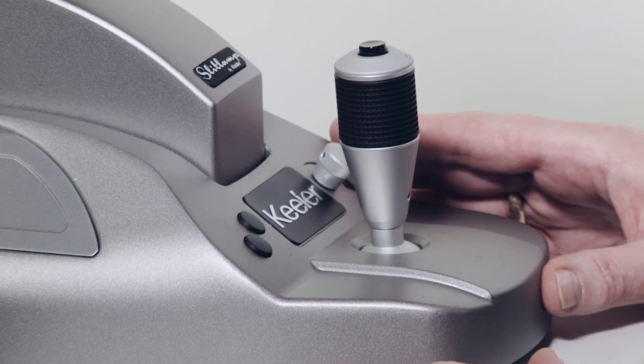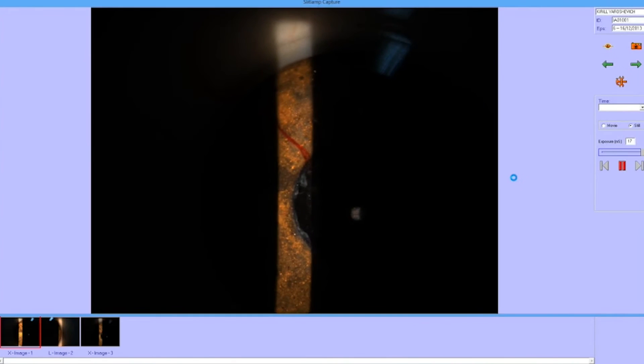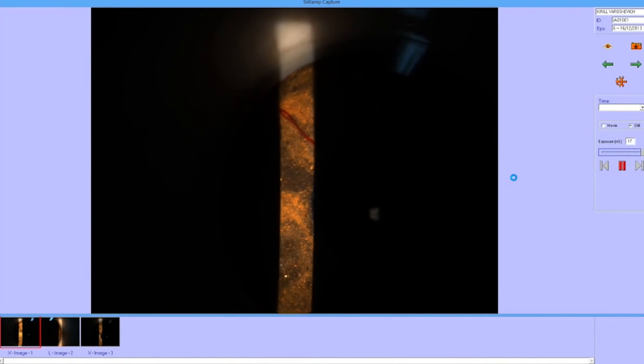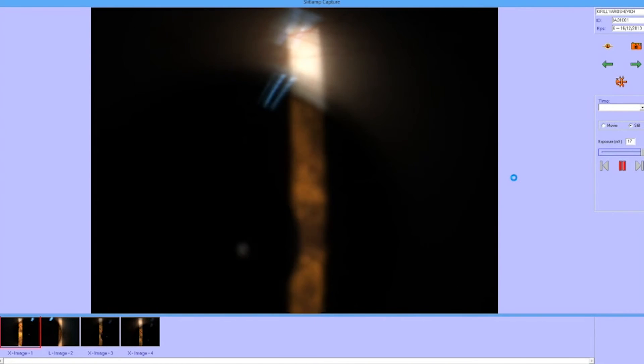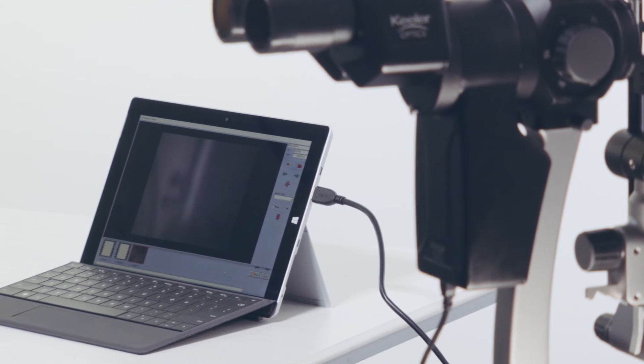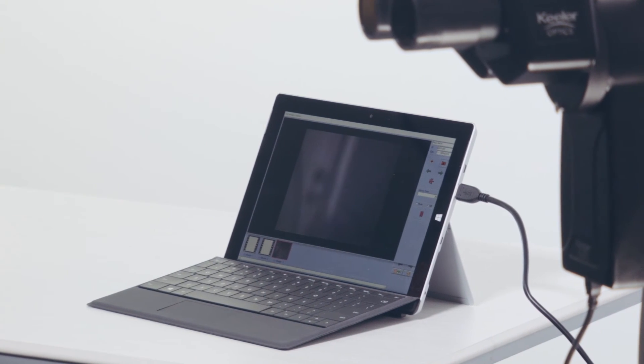Capture an image by pressing the button in the center of the joystick once to freeze frame. Use image review to select the best frame and press the capture button again to capture the selected frame. There are keyboard shortcuts that can be used to quickly adjust digital settings.